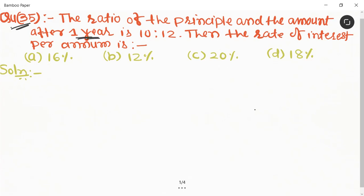Time is equal to one year, and we need to find the rate of interest. First we let the ratio of the principal and the amount is 10 is to 12, so we let principal equal to 10x and amount equal to 12x.